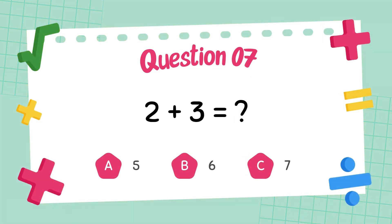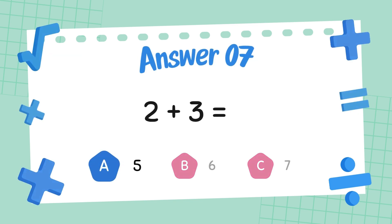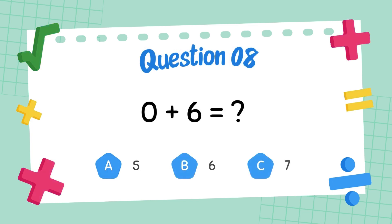What is 2 plus 3? The answer is 5. What is 2 plus 5?